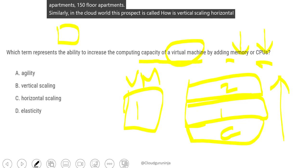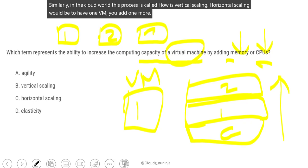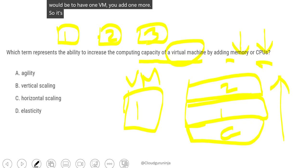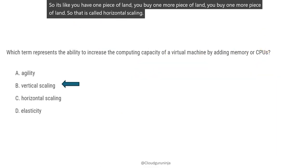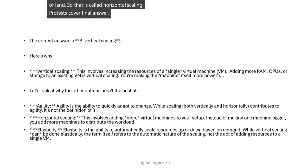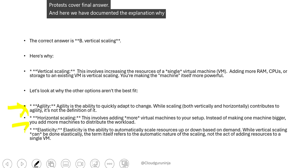Horizontal scaling would be: you have one VM and you add another, then another — like buying additional pieces of land. So the final answer to 'adding memory or CPUs to a single VM' is vertical scaling. We have also documented the explanation for why agility, horizontal scaling, and elasticity are not the correct answers.